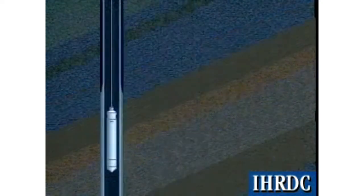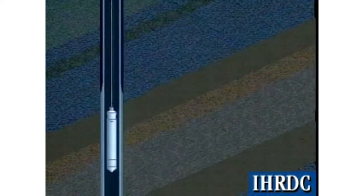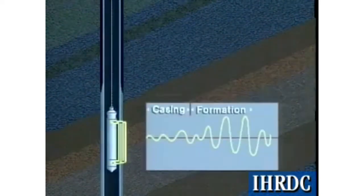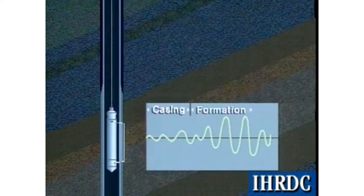Cement contacting the casing tends to dissipate or attenuate the signal energy as the signal propagates through the pipe. The greater the area of cement contacting the pipe, the weaker the signal at the receiver.